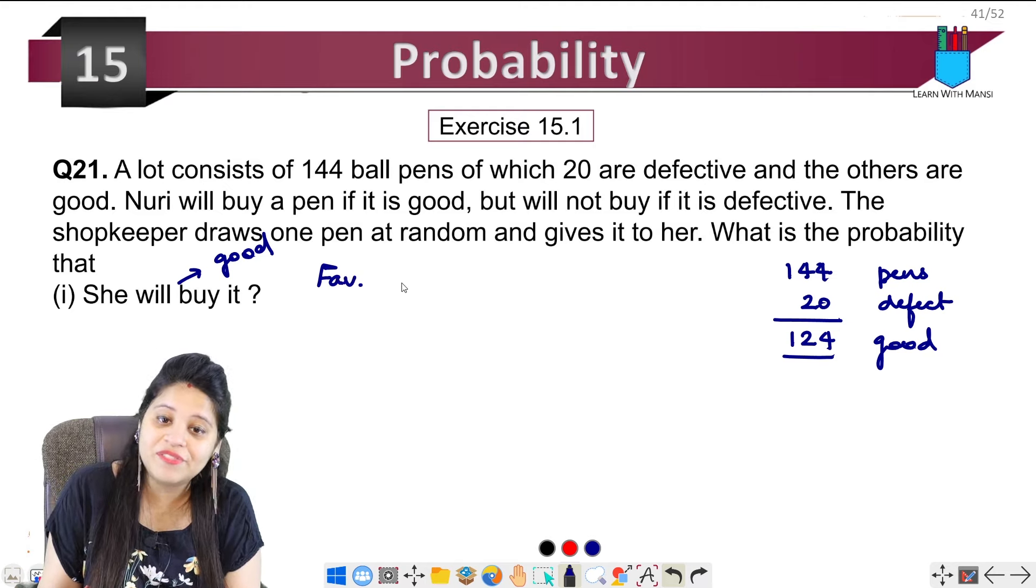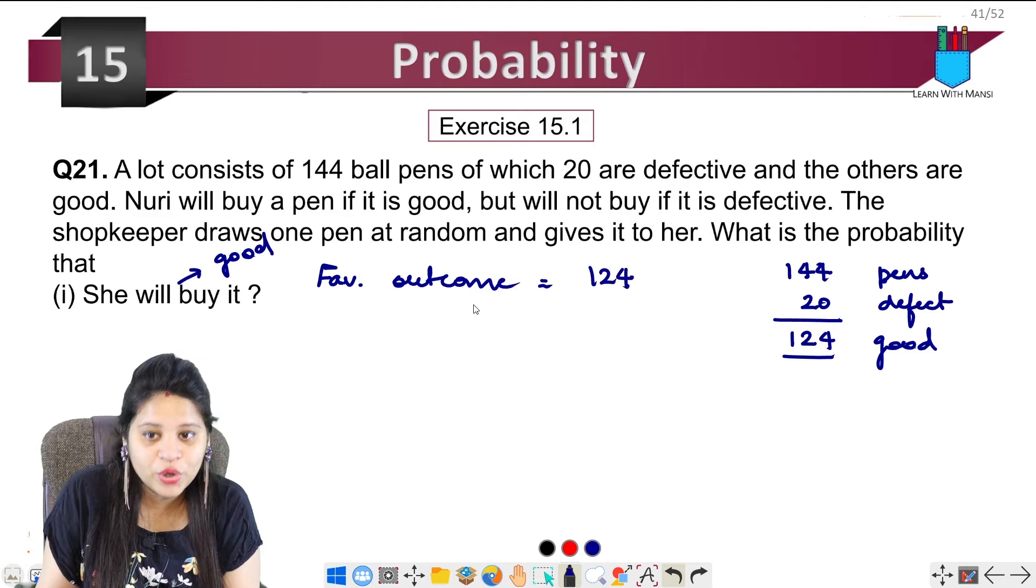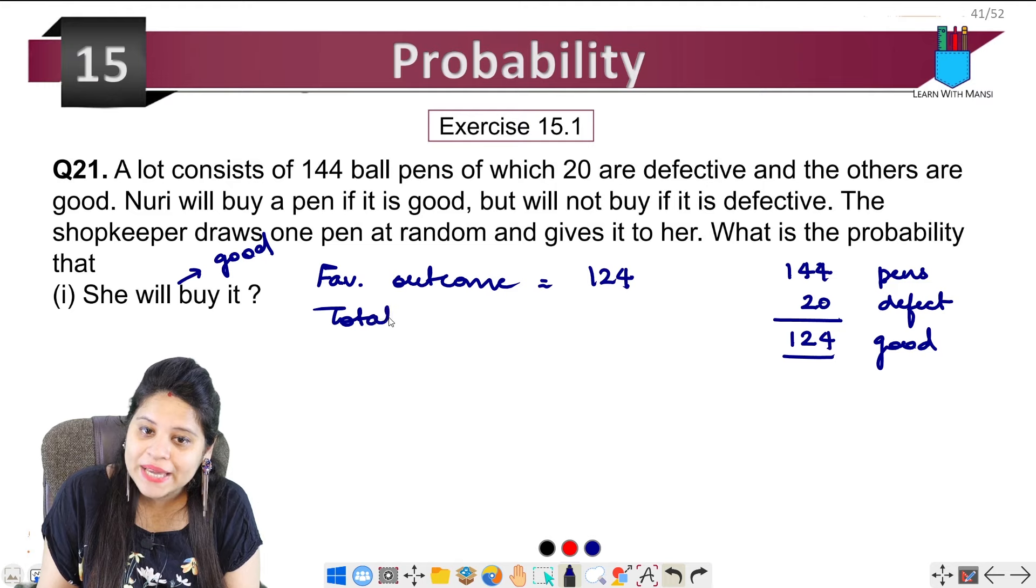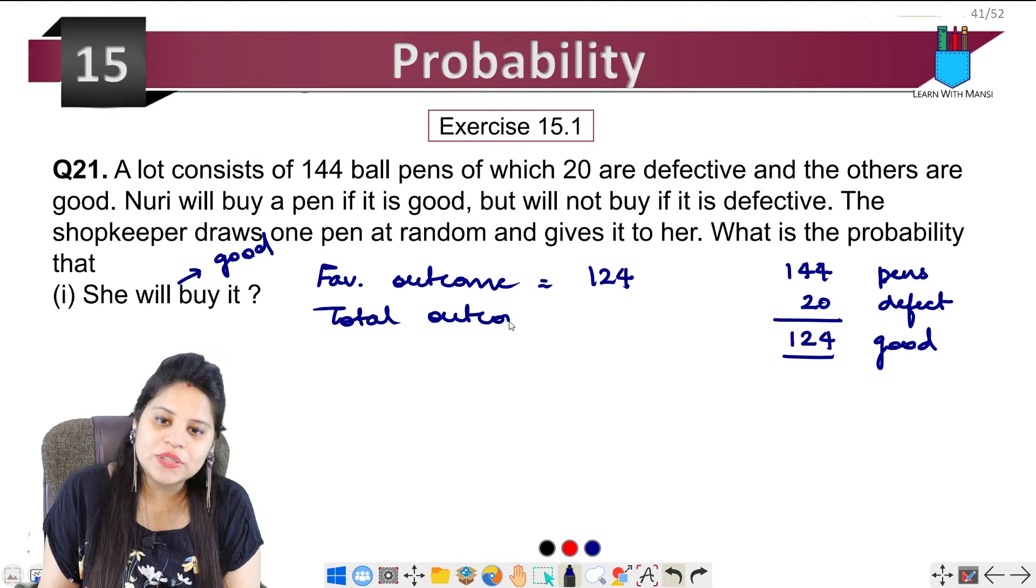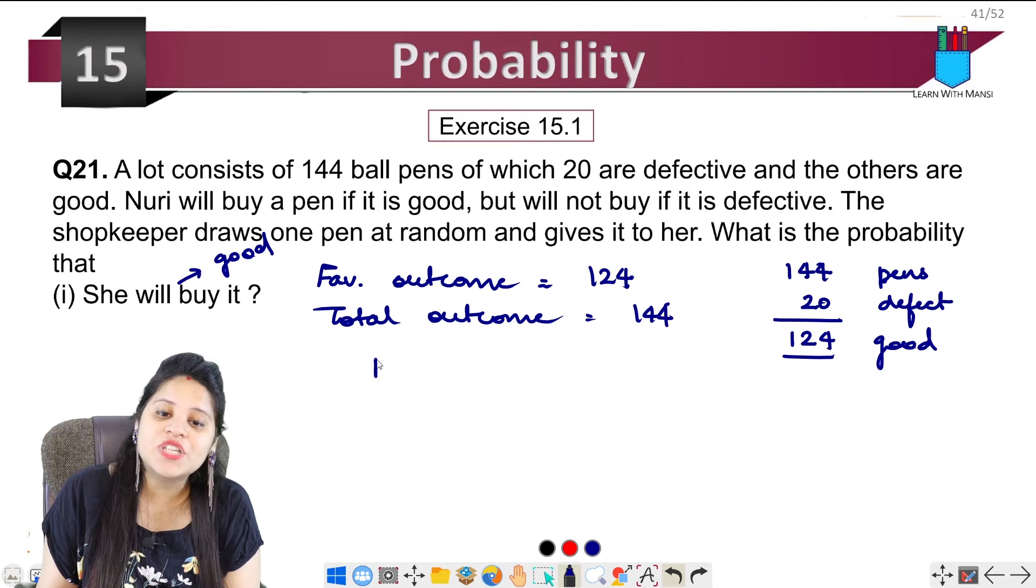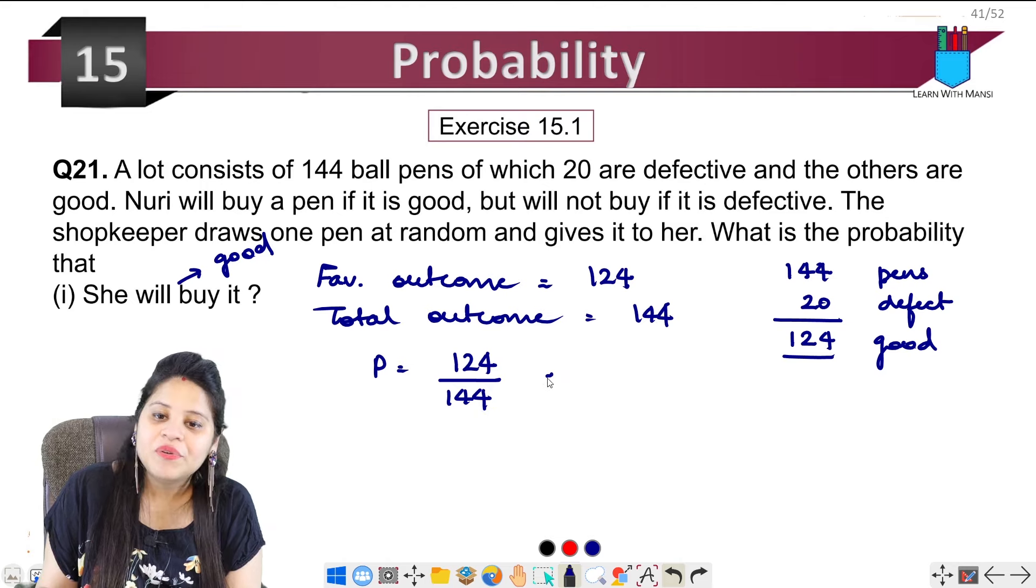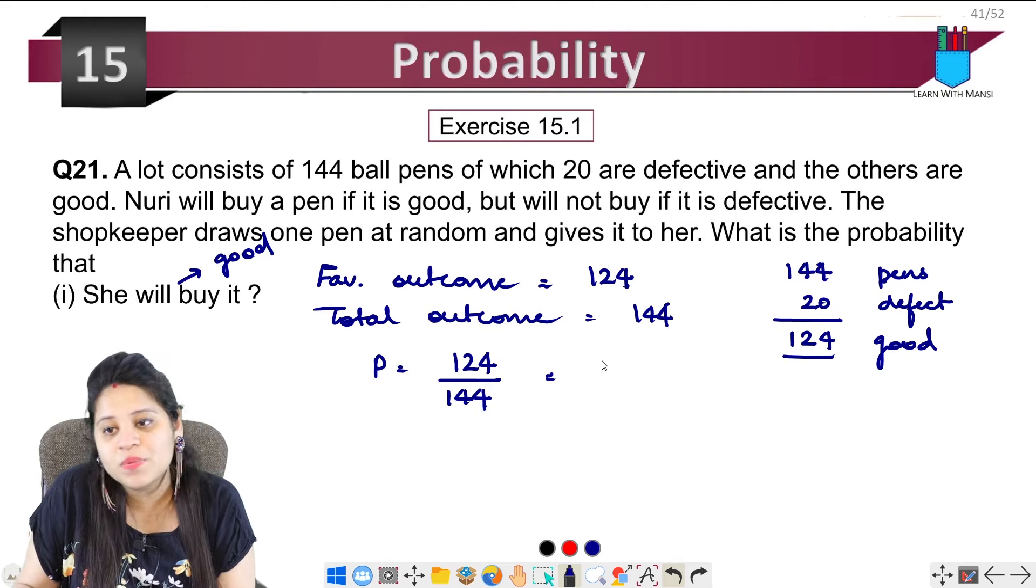So what is our favorable outcome? 124. What is the total outcome? Total pens are 144. So the probability will be 124 upon 144.